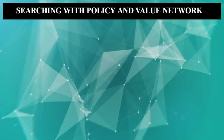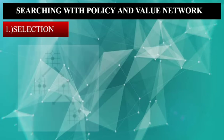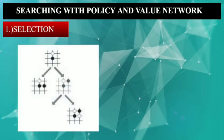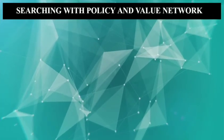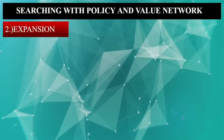In AlphaGo, the Monte Carlo Tree Search algorithm has four steps. The first one is Selection. Look at this board position — assume this is the current board position. We need to select the path and prioritize our next moves. On the right side, we calculate Q plus U, where Q is exploitation and U is exploration, to select the most promising path with red arrows. You could also prioritize moves according to the four factors described in the previous video.